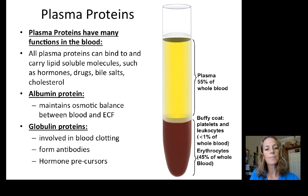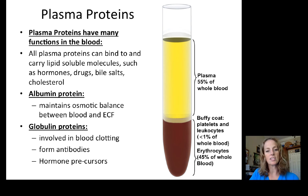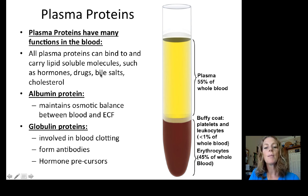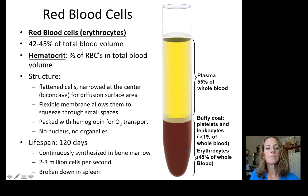Plasma proteins have very important functions. They help maintain osmotic balance during bulk flow. They also carry lipid-soluble molecules — such as hormones, lipid-soluble drugs, bile salts, and cholesterol — that wouldn't normally dissolve in the water portion of plasma. These are primarily albumin, produced in the liver, and globulin proteins, which are involved in blood clotting, form antibodies, and can be precursors to other hormones.